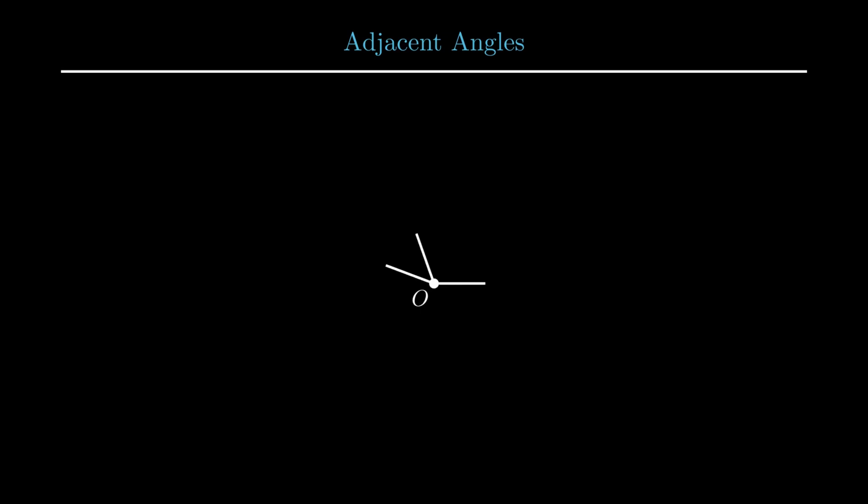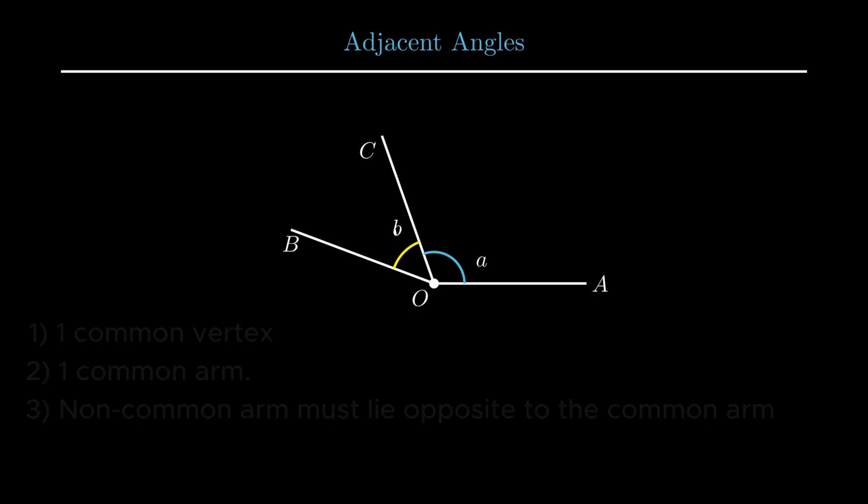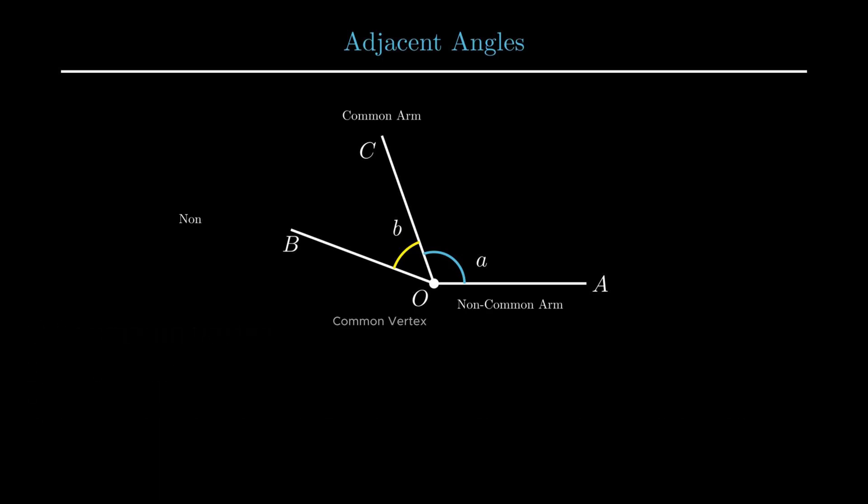Moving on to the next study of angles, we have adjacent angles. The word adjacent means next to. To identify a pair of angles as adjacent, we need to inspect three necessary conditions. First condition is that the angles should have only one common vertex. Second condition is that the angles must have one common arm. And lastly, their non-common arms must lie opposite to the common arm. From the figure, O is the common vertex, OC is the common arm, OA and OB are the non-common arms lying opposite to the common arm OC.